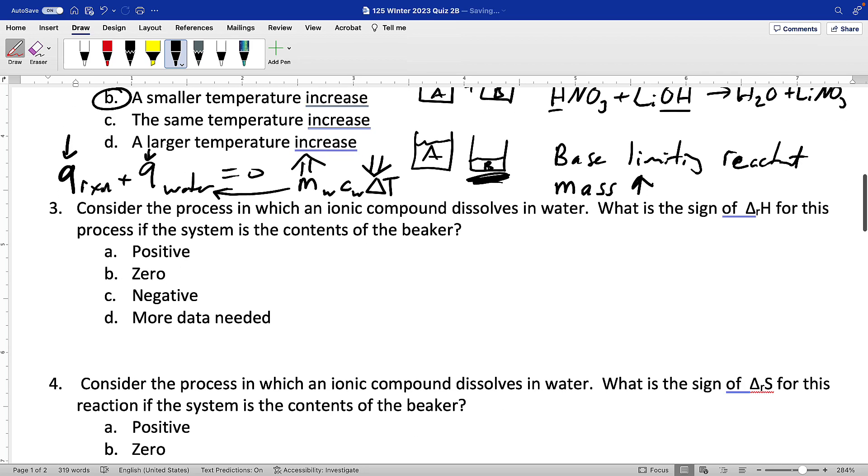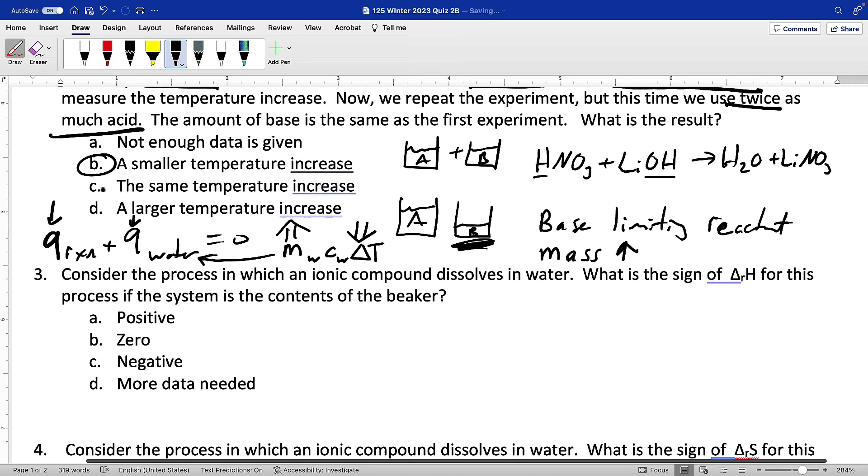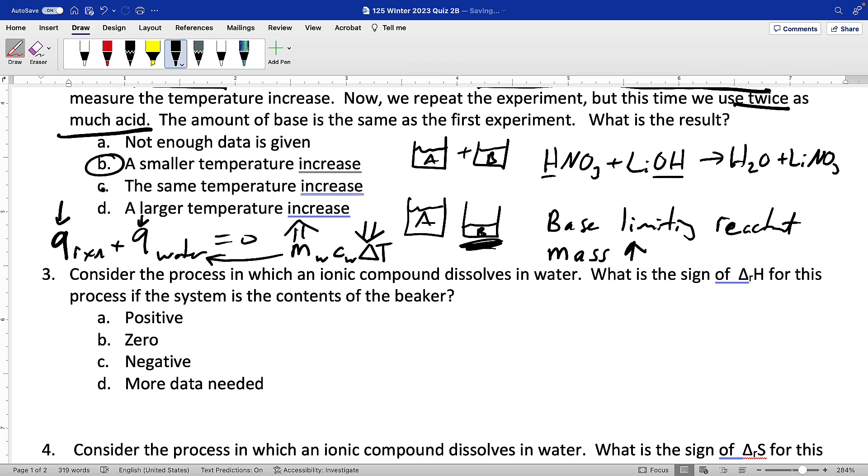Number three. Consider a process in which ionic compound dissolves in water. What is the sign of delta H for this process? We've got salt solid going to salt aqueous. We're going to break ionic bonds. That's going to cost us energy. That's endothermic.